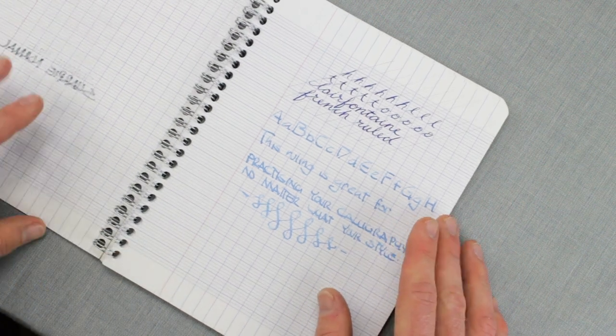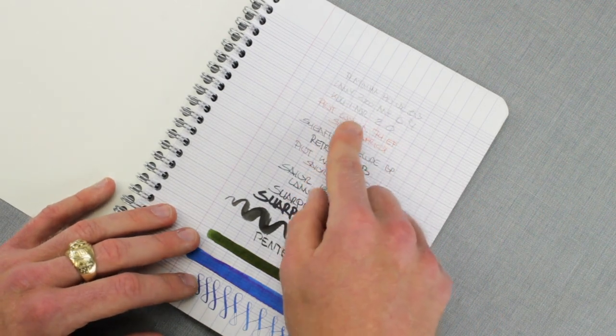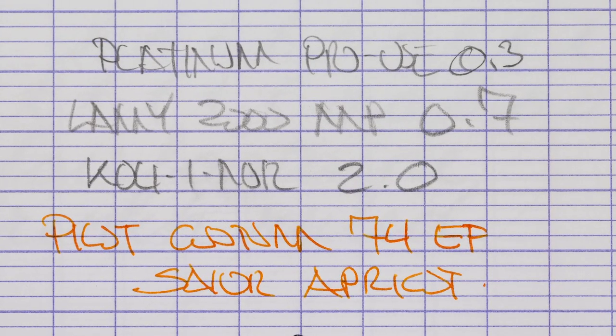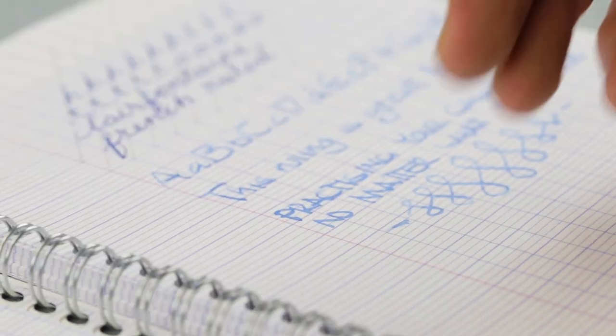A few things I would note about this. Because the page is so busy, writing instruments like pencils really get lost. You're gonna need something that's probably an ink, either a ballpoint, rollerball, or a fountain pen for it really to become visible on the page.